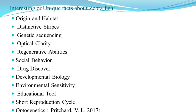Regarding interesting and unique facts: zebrafish are native to the streams and ponds of India, Bangladesh, Nepal, and Myanmar. Their distinctive stripes — black and white horizontal bands — give them their name, resembling a zebra. Their genome was fully sequenced in 2013, and approximately 70% of their genes are similar to humans, making them a key model organism for studying human diseases and genetics.